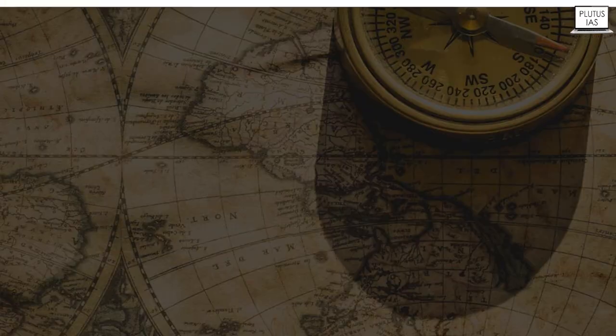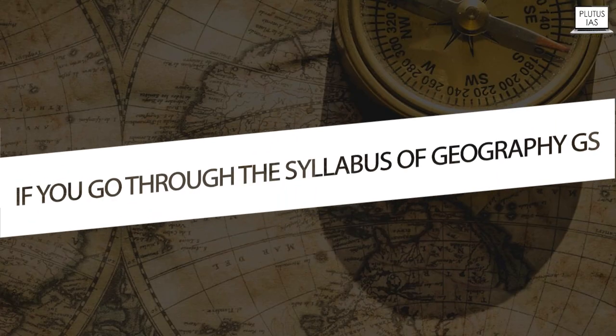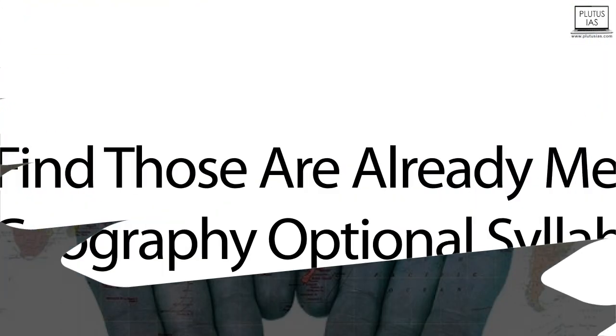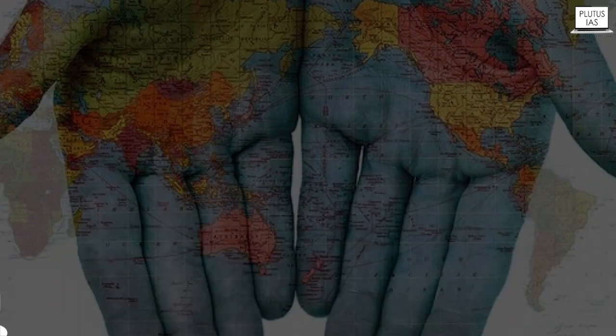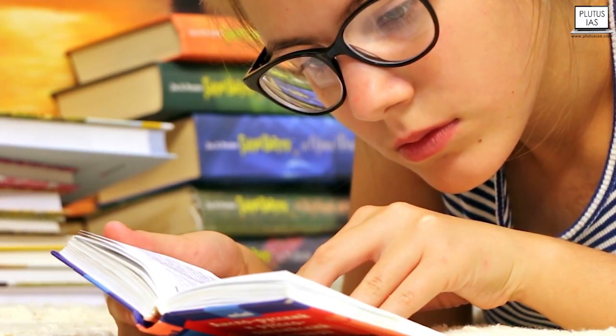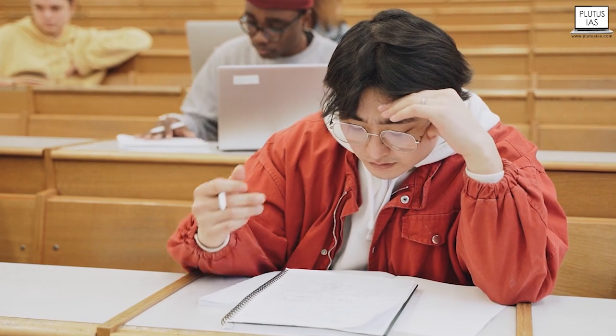See, if you go through the syllabus of geography for GS, you will find the syllabus has all horizontal stretch or extremes of geographical topics. And you will find those topics are already mentioned in the geography optional syllabus as well. But in the case of geography optional, the difference is only the depth of knowledge and the depth of understanding that you are supposed to demonstrate in the examination.